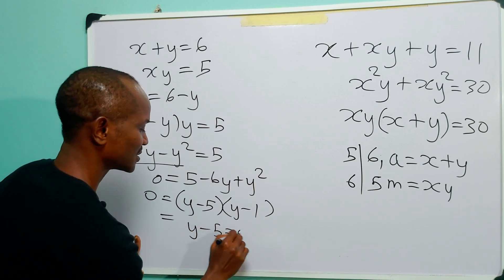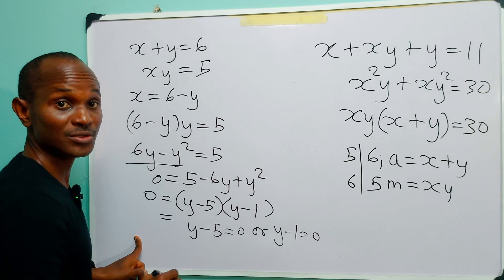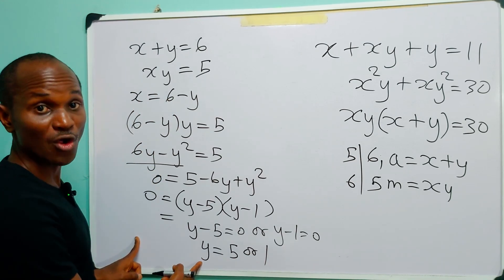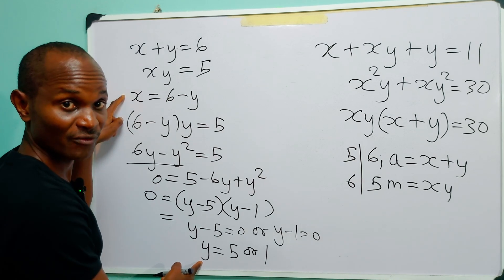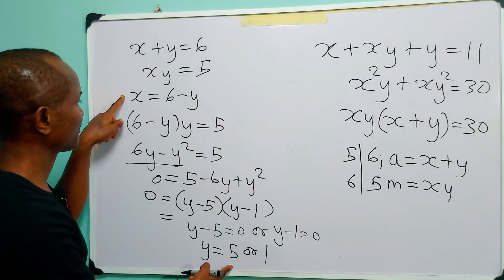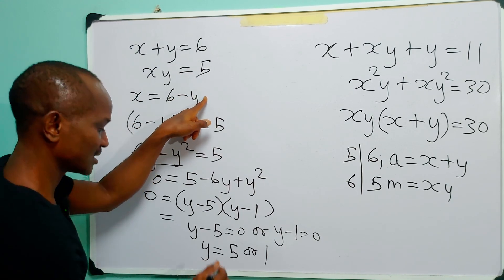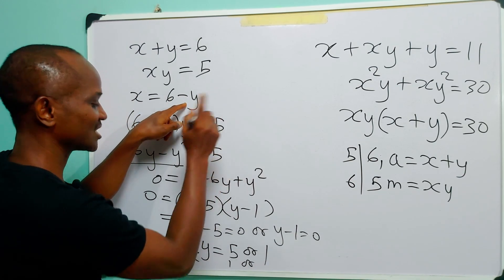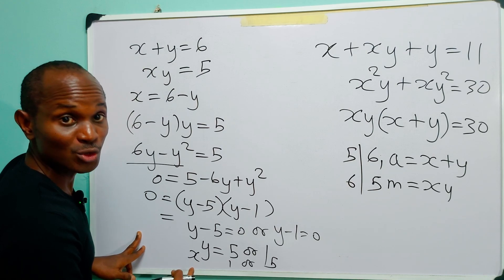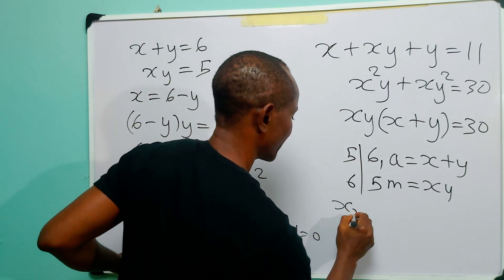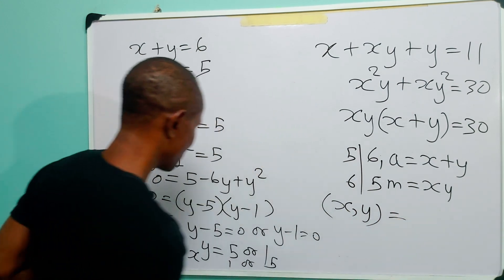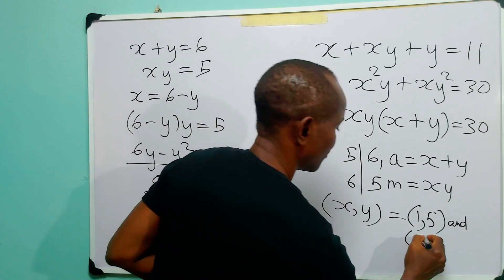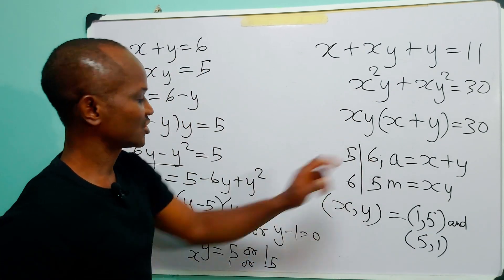From here we have y minus 5 equals 0 or y minus 1 equals 0, so y is equal to 5 or 1. Going back to find values of x: when y equals 5, x equals 6 minus 5 which is 1; and when y equals 1, x equals 6 minus 1 which is 5. So the first solution pairs are (1, 5) and (5, 1).